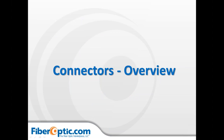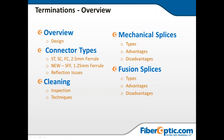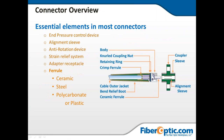Now we're going to go over connectors and polish. You can see connector types, cleaning, mechanical splices, and fusion splices. A general connector is shown here. On the right-hand side is the connector itself; on the left is what's called a coupler, sleeve, alignment sleeve, or adapter mating sleeve. A mating sleeve is used to make two fiber optic connectors connect to each other.